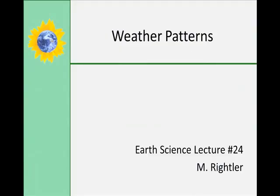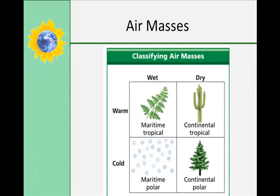Welcome back. Now that we've learned about weather factors, let's talk about the patterns that weather makes. An air mass is a huge body of air that has similar temperature, humidity, and air pressure. Air masses are classified according to temperature and humidity. The four major types of air masses that influence the weather of North America are maritime tropical, continental tropical, maritime polar, and continental polar, and you can see a chart comparing those here.